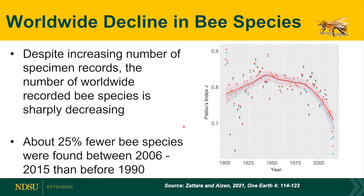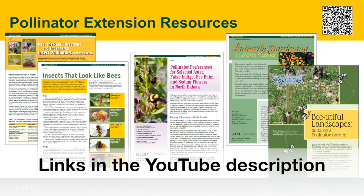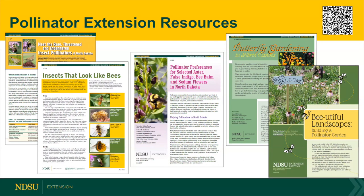We have a number of pollinator extension resources available to you. A lot of the things I talked about — the pictures of flowers during spring, summer, and trees and shrubs — came out of this publication, and that should have been sent or put up on the website for you. Here are also a couple books from Xerces — they have a lot of good information on their website and some fact sheets. If you're looking for a fact sheet on the mason houses, that is a good place to go; they tell you how to set them up and how to maintain them.